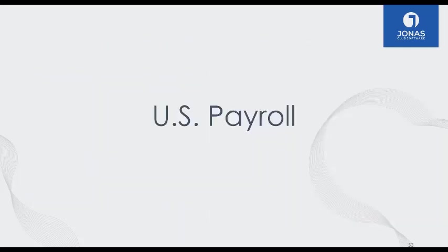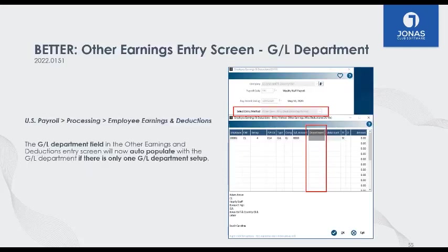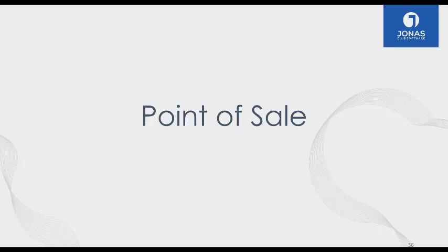On the US payroll side, just one new feature for this quarter: if any of you have just one department set up in Jonas, we've made it so you don't have to choose that one department manually — it will just auto-populate with that department already selected. Just a simple time-saver.